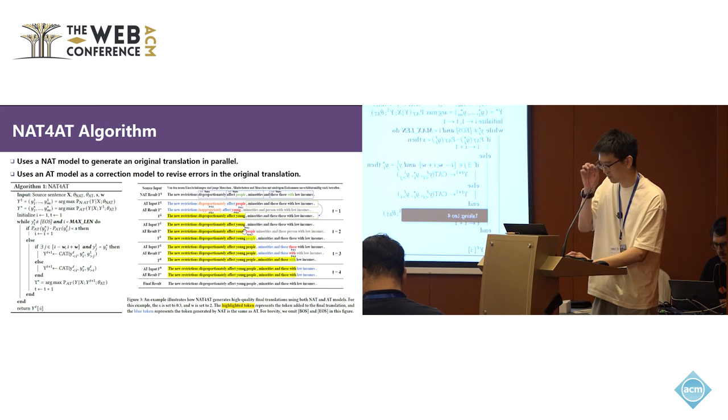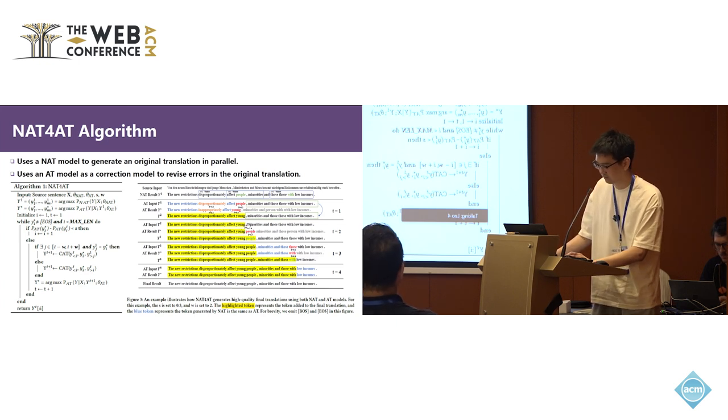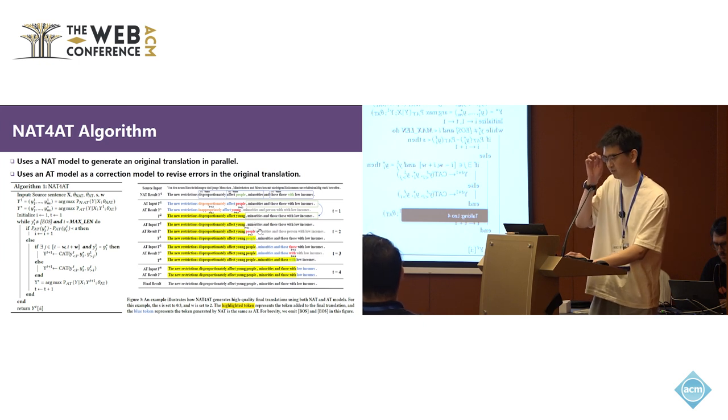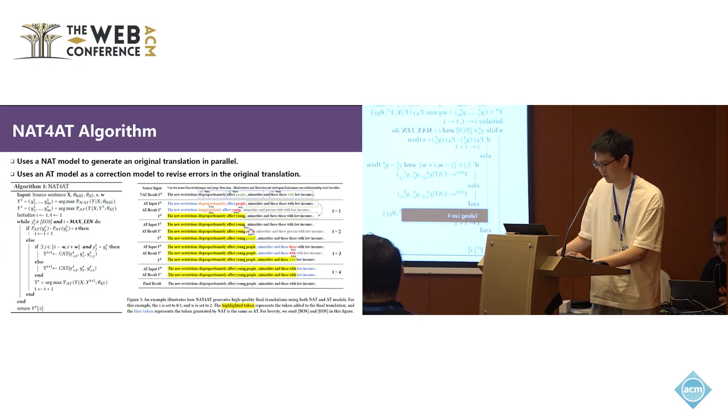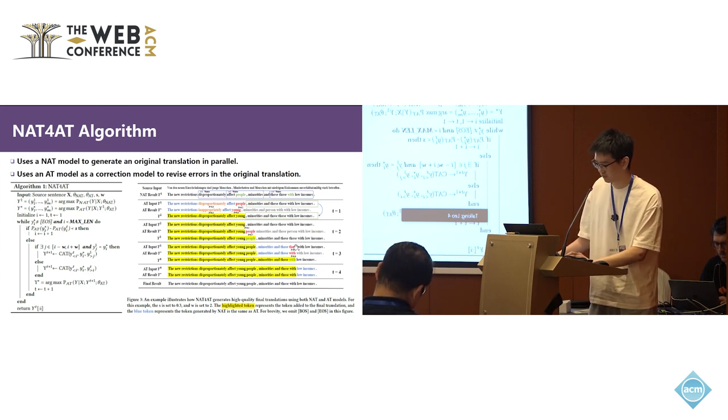Then our method can also find the token that needs to be corrected in Y2 and revises it using the AT result. This is the word 'people'. Because 'people' exists in the sliding window, we can connect the subsequent content in the original result to 'people' to get Y3. The case of T equals 3 and T equals 4 is similar to before, continuing until the end.